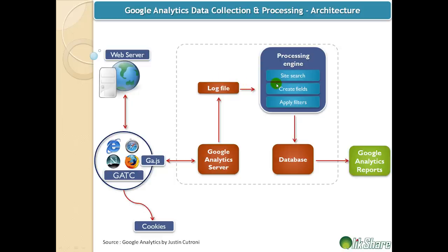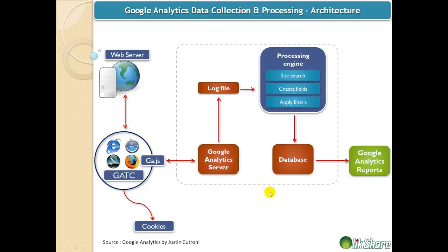The log file is then used by a processing engine, which I believe runs once every three hours, though that may have changed. This processing engine takes the data from the log file, applies configuration settings, creates fields, and applies filters. The actual Google Analytics report fetches data from this database. This is a very high-level overview, but I would recommend reading the Google Analytics book by Justin — it's a fantastic book covering how to use Google Analytics and its configuration settings.